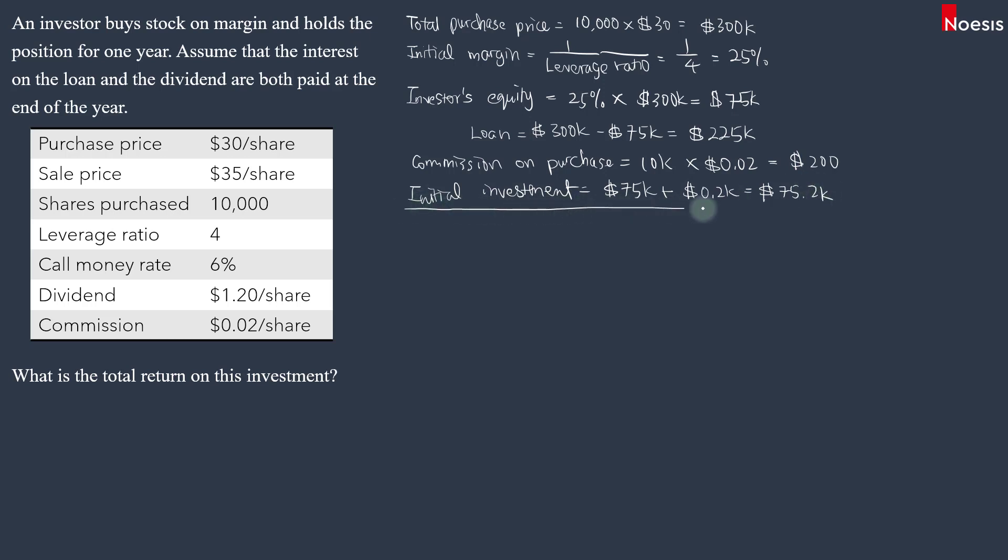We'll leave it at this point and then fast forward to one year later, which is the end of the holding period. What do we need to account for? When the investor sells the share, the sales proceeds will be $10,000 times $35 a share. So that will be $350,000. And then we'll add on the dividends. Dividends will be $1.20 a share. So that will be $10,000 times $1.20. That will be $12,000.